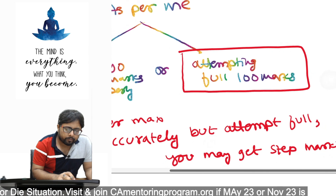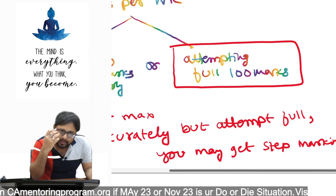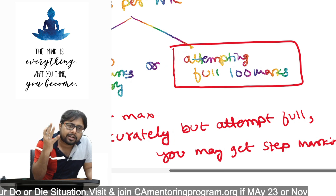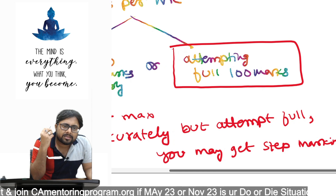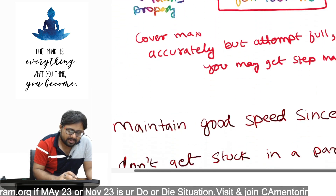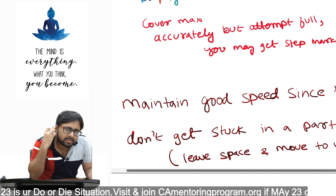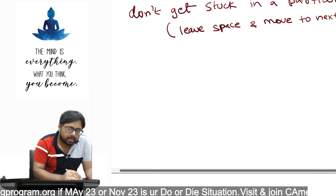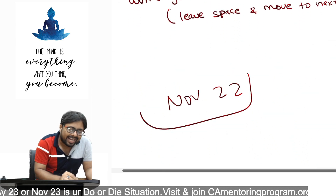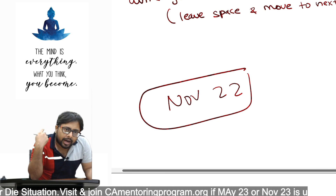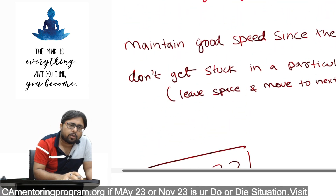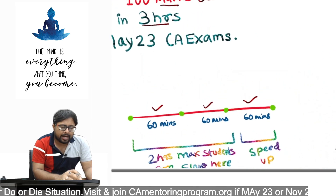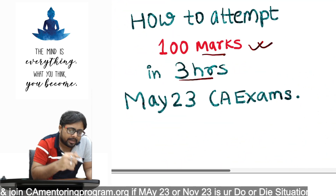One thing we get to know from examiners is they really want you to pass. Yes, it's a fact. But if you leave it blank, they simply cannot give you any marks. We need more professionals — more Chartered Accountants, CSs, and CMAs. That's why the November 2020 and November 2022 results were good, and as I've mentioned in my previous videos, upcoming May 2023 and November 2023 results will also be good. We need more professionals to help businesses. So it's the time to get good marks, and that can only happen if you utilize your three hours properly and attempt 100 out of 100.